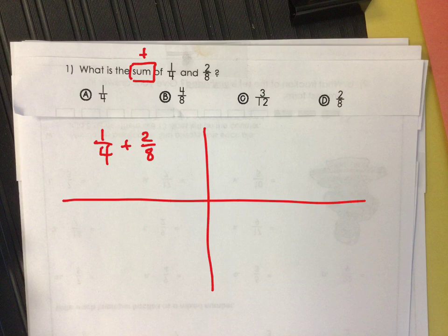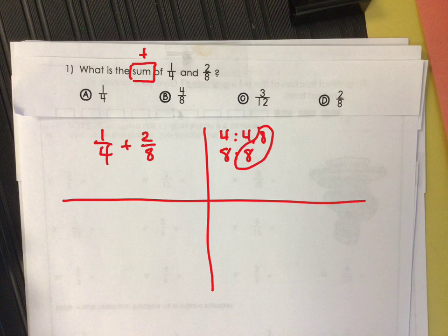Our denominators are 4 and 8, so let's find a common denominator. How many of you could just see that? Hopefully many of you. So we know our denominator is going to be 8ths. So now we come down and say, all right, now I need to make equivalent fractions.